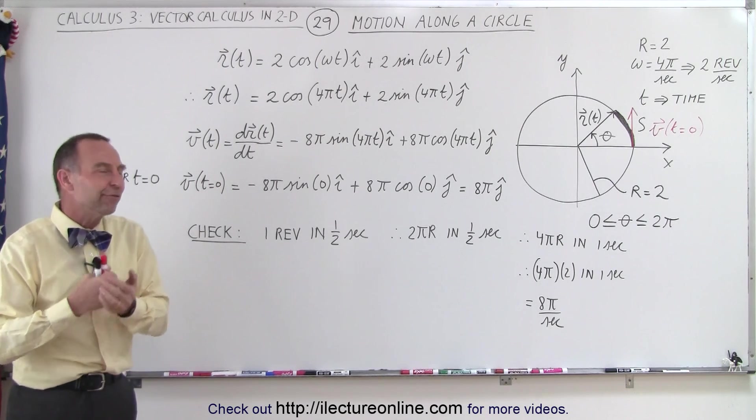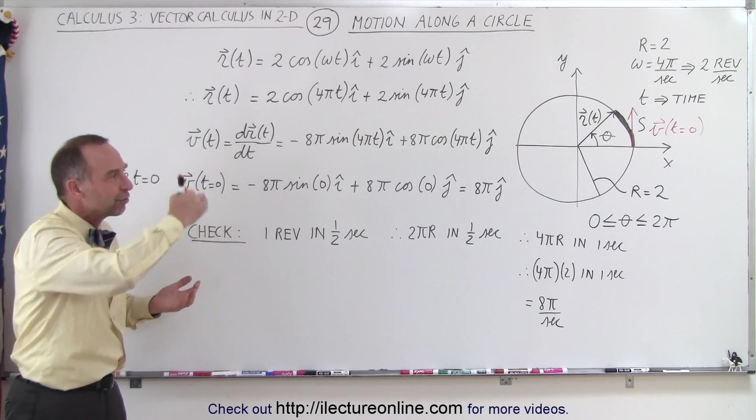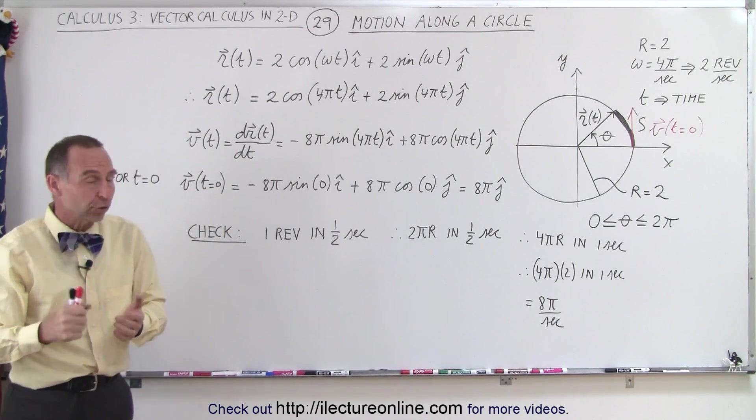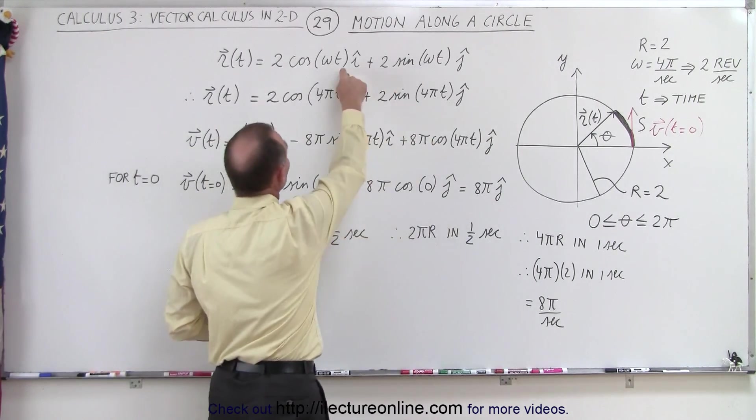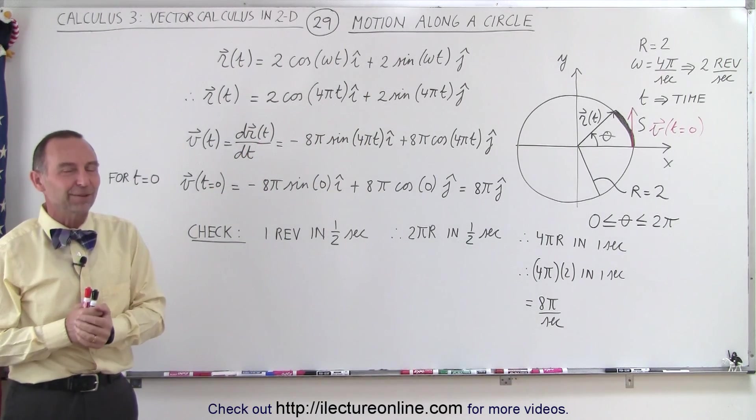This is how we define the velocity along the path of travel around the circle based upon the position vector defined over here. That's how it's done.